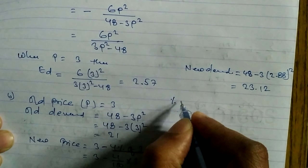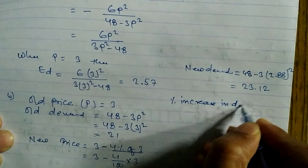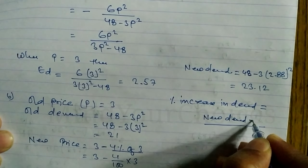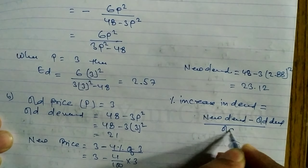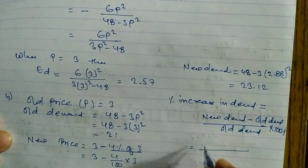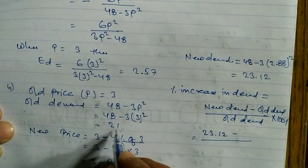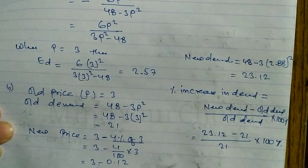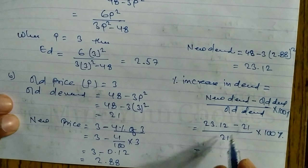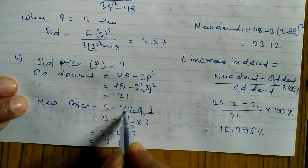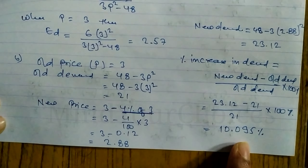Now finding the percentage increase in demand: percentage change = (new demand - old demand) / old demand × 100%. So: (23.12 - 21) / 21 × 100% = 2.12 / 21 × 100% = 10.095%. So if price decreases by 4%, demand increases by approximately 10.095%.